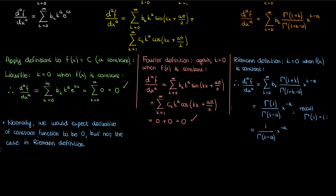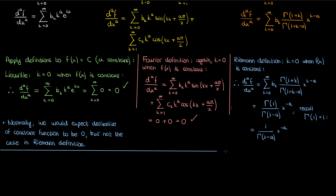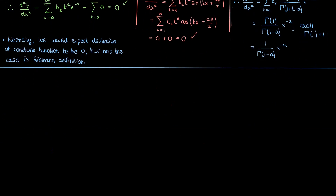So now I'm at an impasse. The question I have to ask myself is: what can I do to help myself differentiate polynomial functions, but also maintain the consistency that the derivative of a constant function should be zero? Well, I can certainly do something, and that something involves developing the Caputo definition of a fractional derivative.